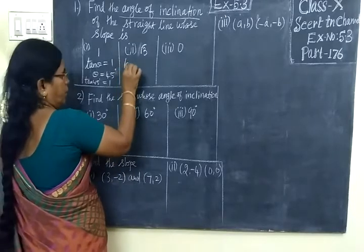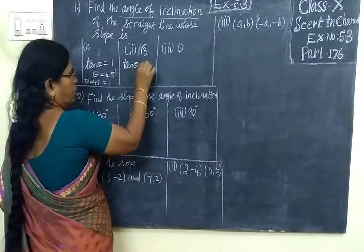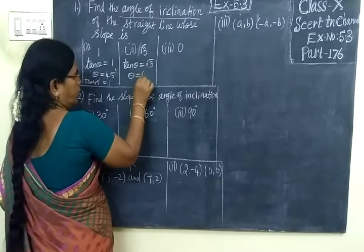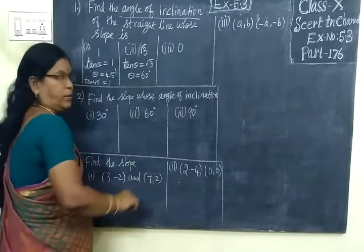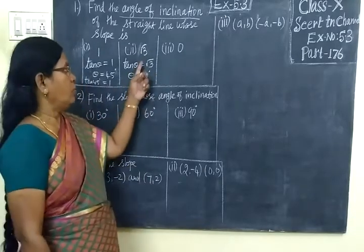Here tan θ equals √3, that means θ equals 60 degrees. For tan 60, we know the value is √3.